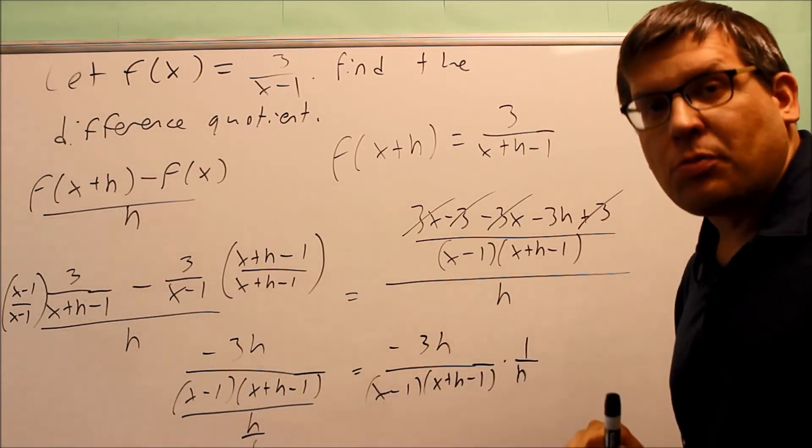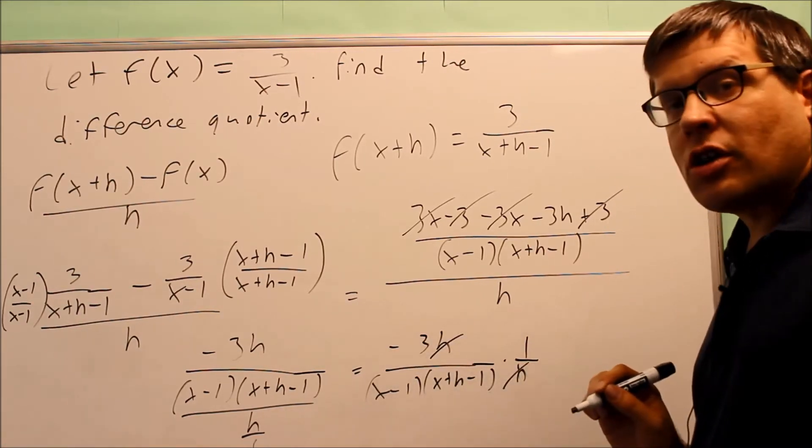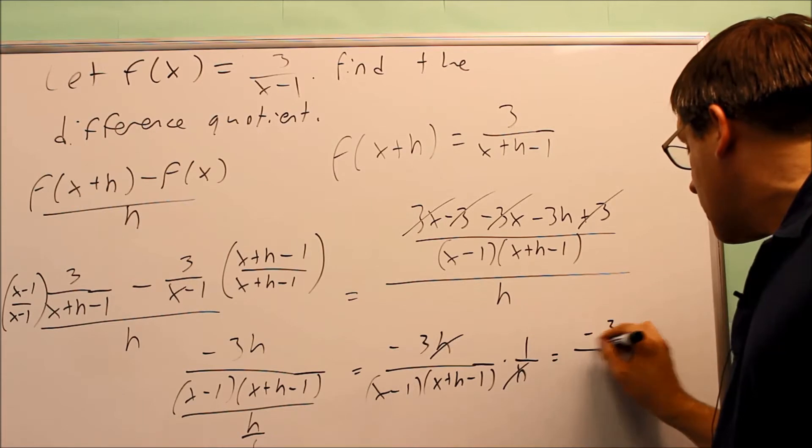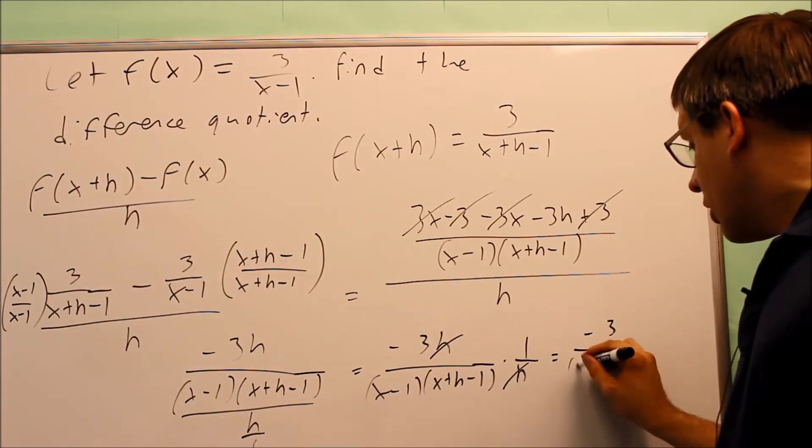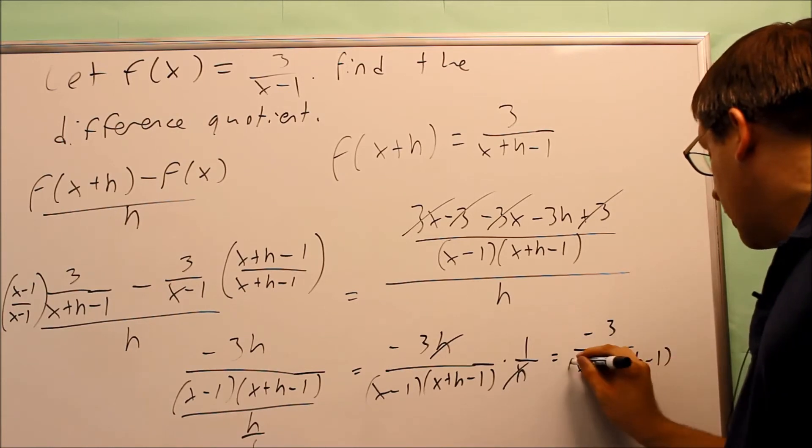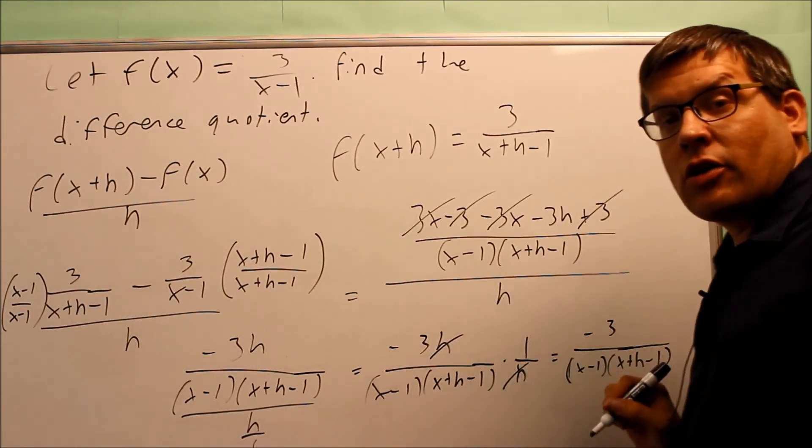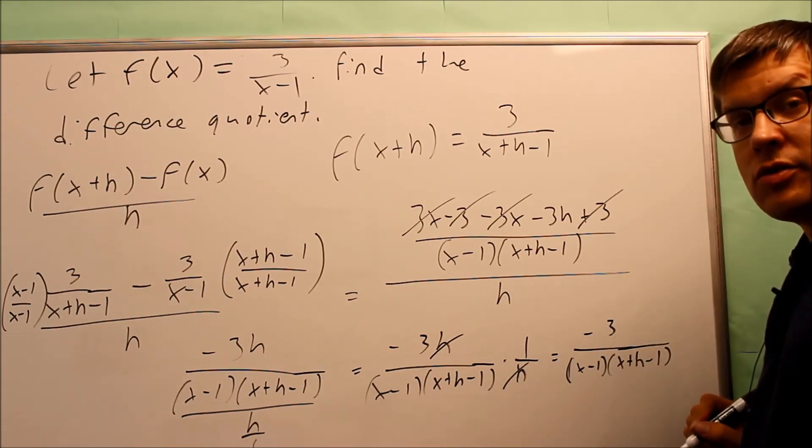What happens is the two h's are going to cancel here. And so your final answer is negative 3 over x minus 1, x plus h minus 1. And that would be as far as you can go with your answer. I can't cancel that out or do any more with that one, so this would be your final answer.